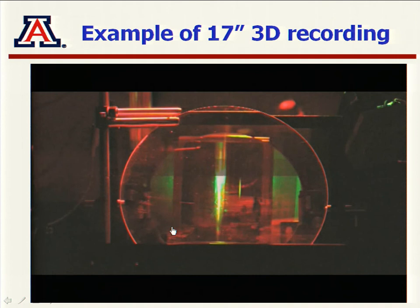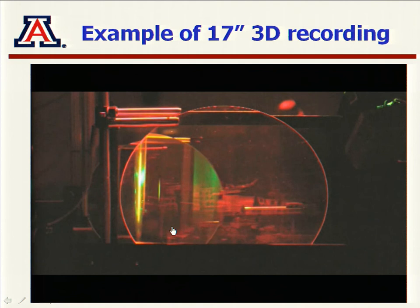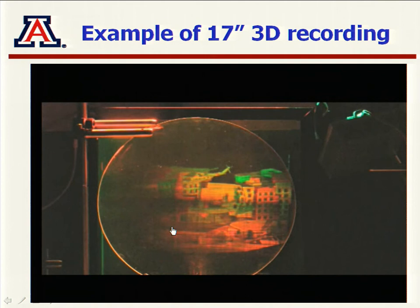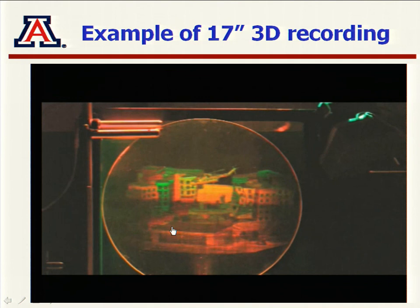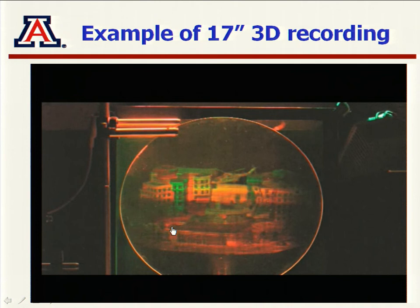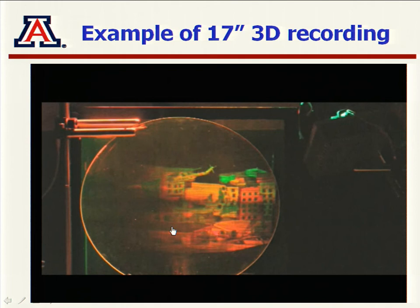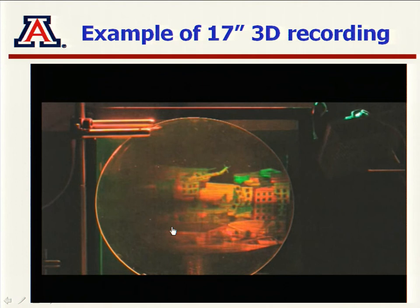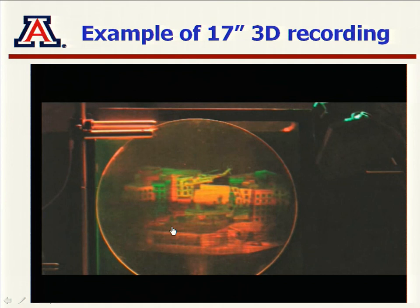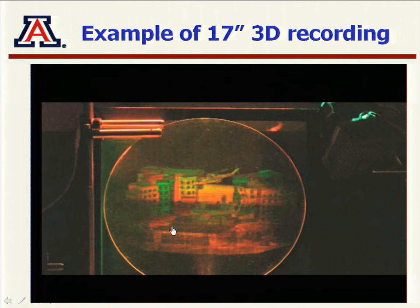Here is an example of an image we make: a 30-centimeter, 17-inch display being written in real time. I'm trying to show a 3D image on a 2D screen, so we do it by moving the camera around so that the images appear to move — showing different perspectives. It's colored, and it's a building with a helicopter on top. As you can see, you can write it not at video rate but at least in a matter of a few seconds on a large-area display.